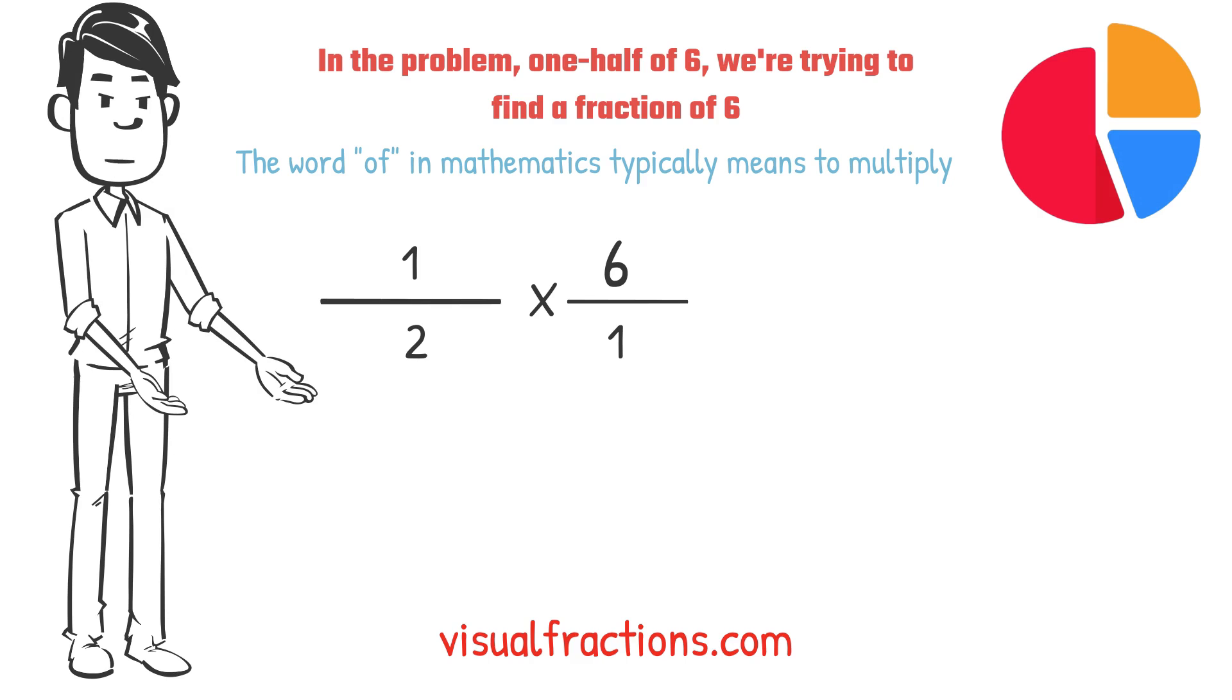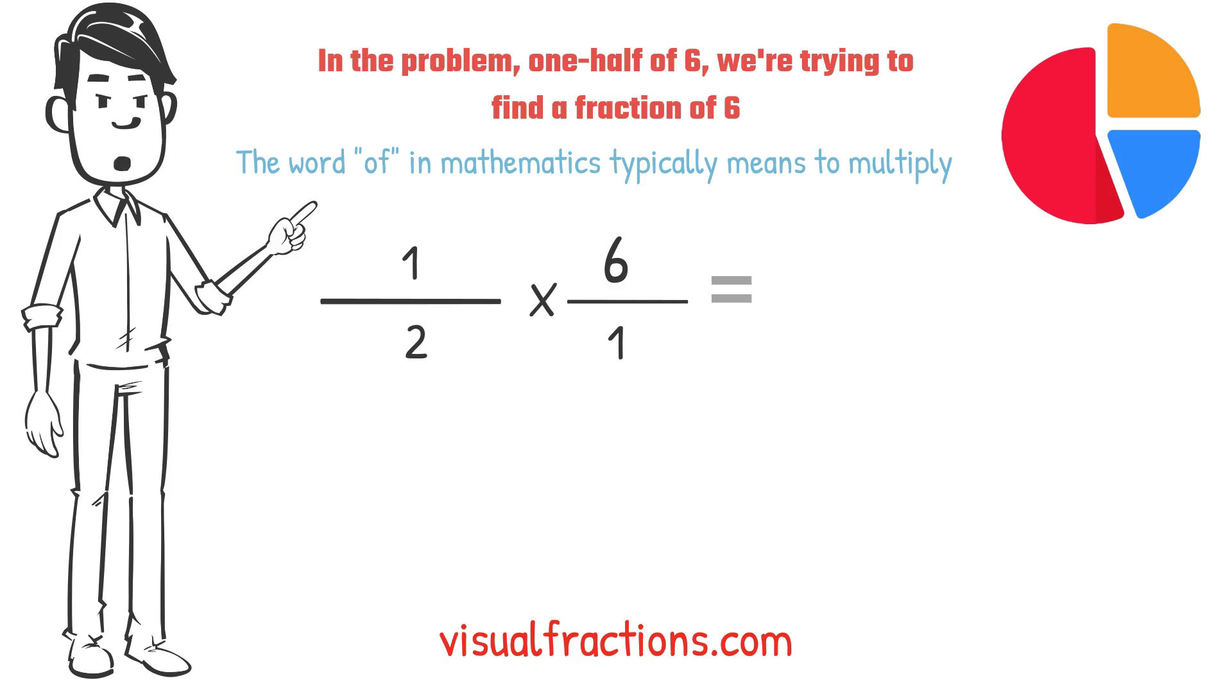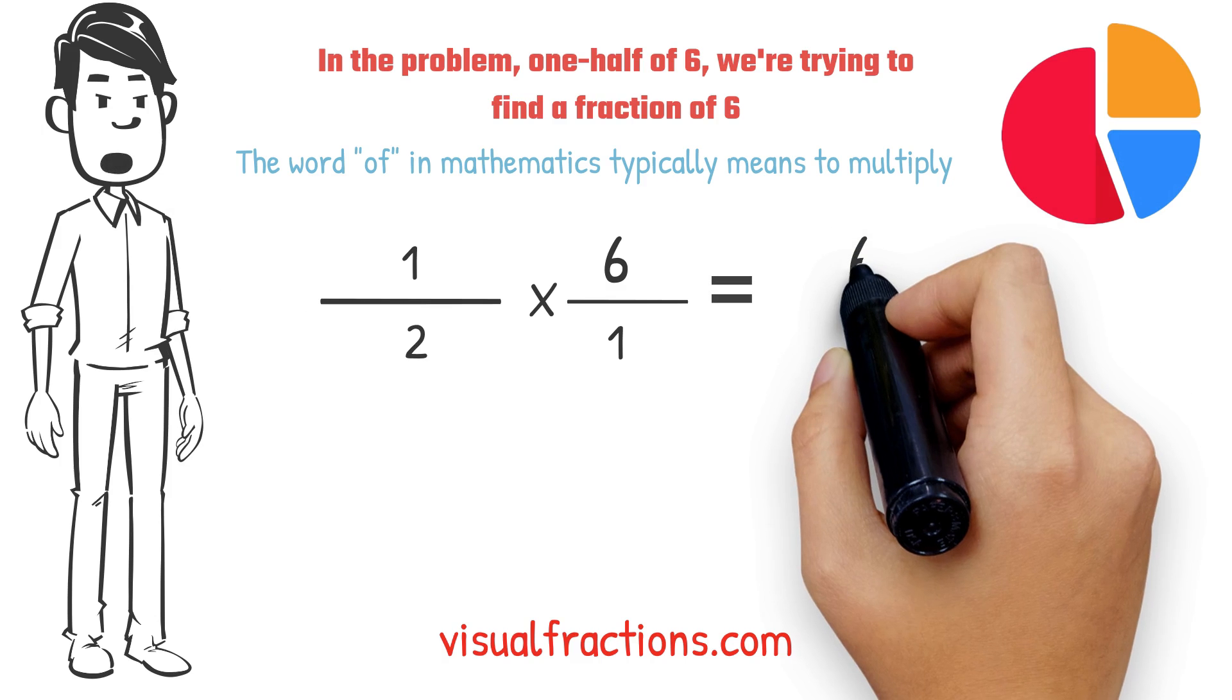Now, we proceed to multiply across. First, multiply the numerators, one times six equals six.